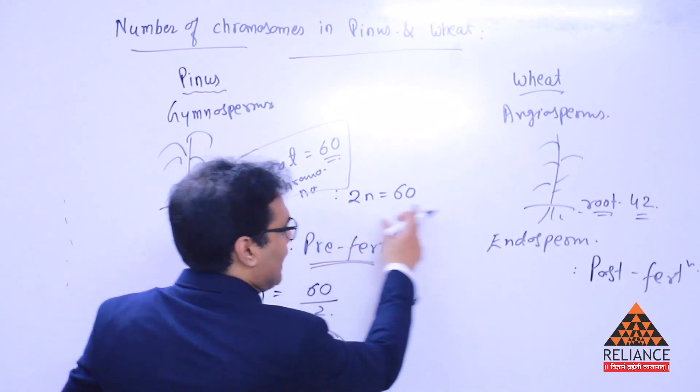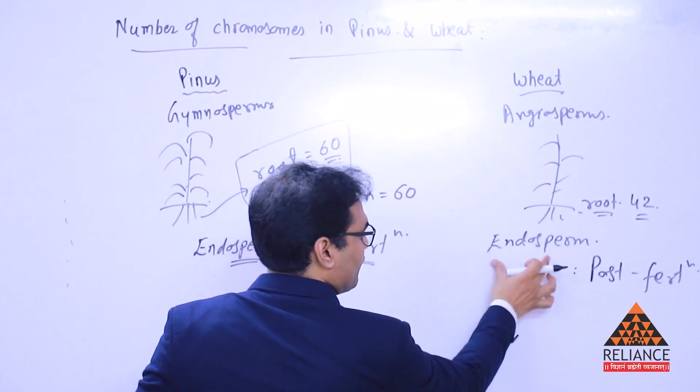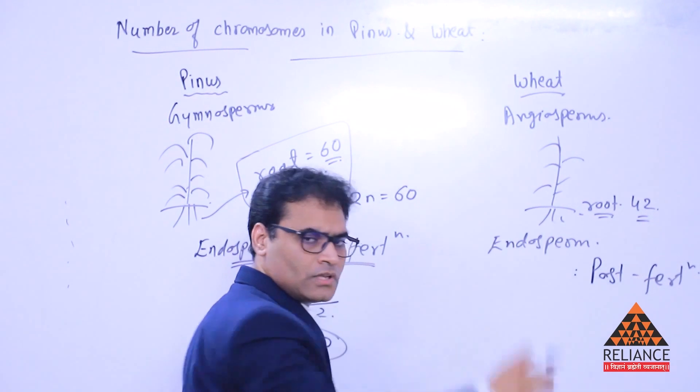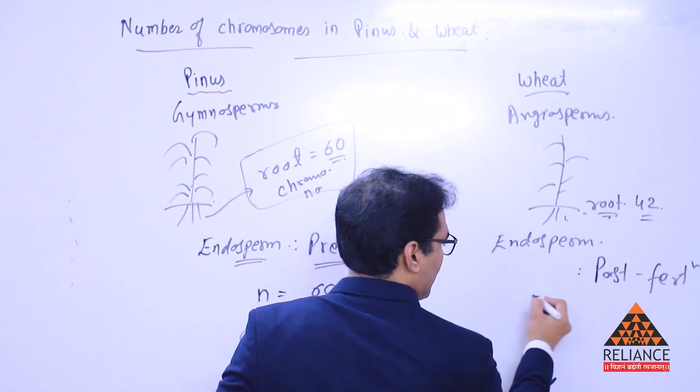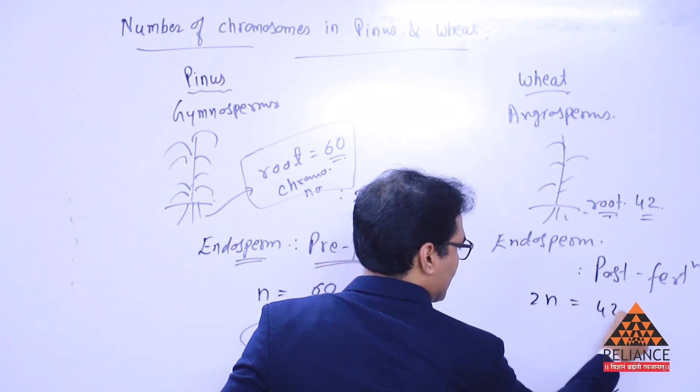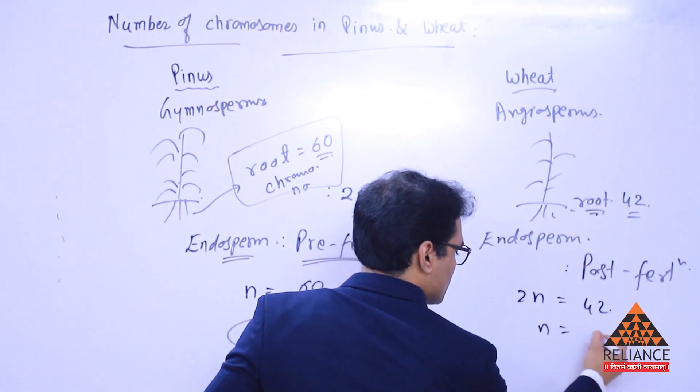Then, we go ahead with the wheat plant. What we're seeing, you're going to find out endosperm cell, the total chromosomes. So, root cell again being diploid, 2N is going to be 42 over here and N will be 21.